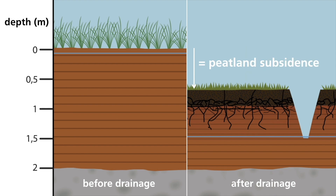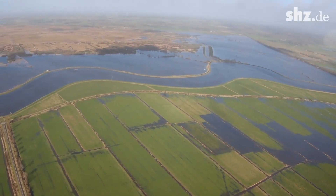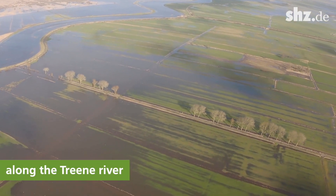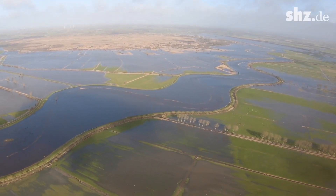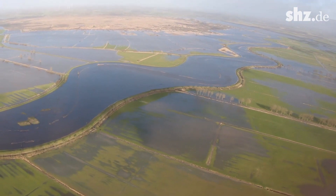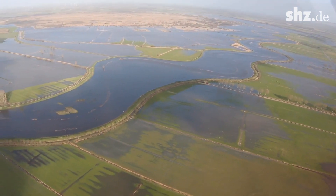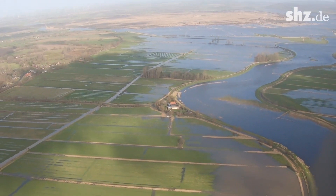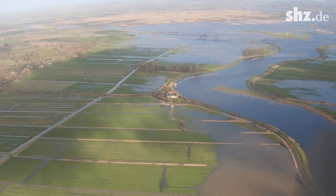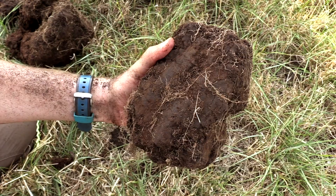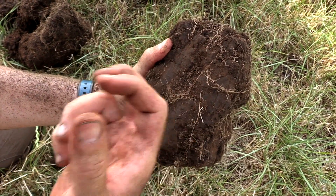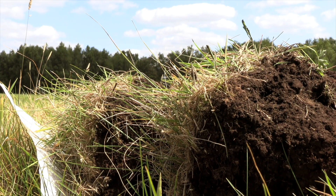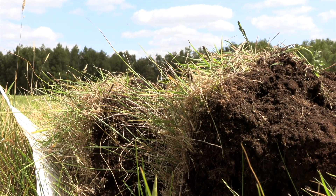After decades of drainage, deep peatlands can subside up to several meters. Peatland subsidence and peat soil compaction can cause problems on a landscape level — for example, the land surface can sink below the water level in nearby rivers or below sea level. Such areas are prone to flooding and can only be kept dry by continuous and expensive pumping. Furthermore, shrunken and compacted peat loses its ability to swell and effectively take up water. This is how drained peatlands lose their ability to store water in the landscape.